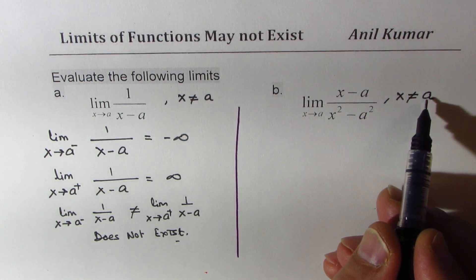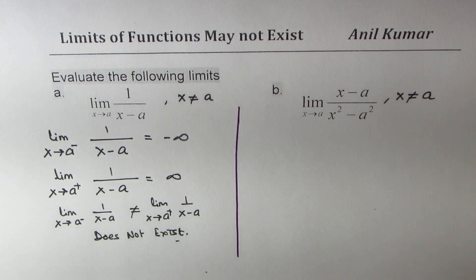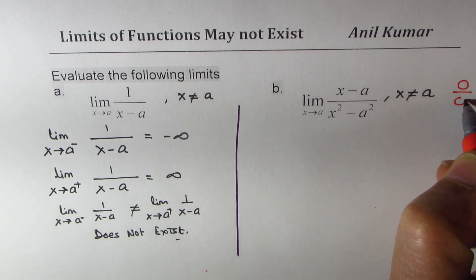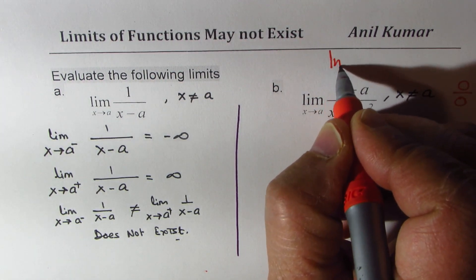If I substitute a in the numerator, and also in denominator, what do I get? I get a situation, which is 0 over 0. Now that is called indeterminate.